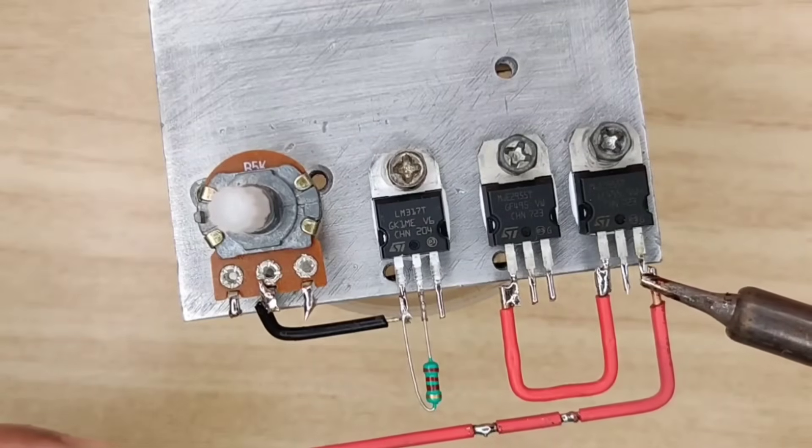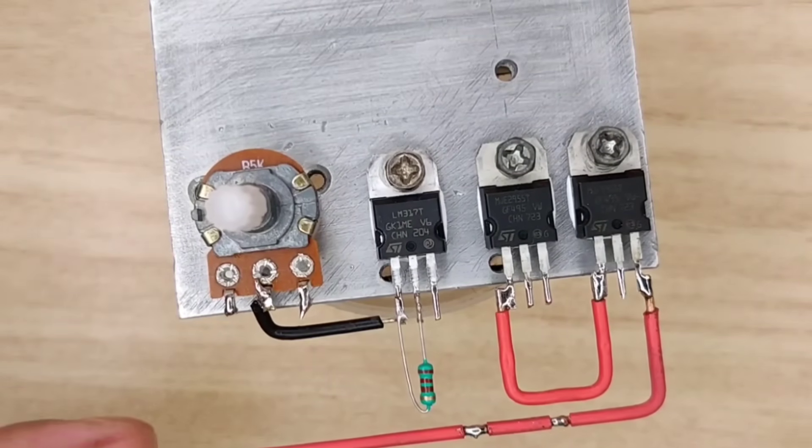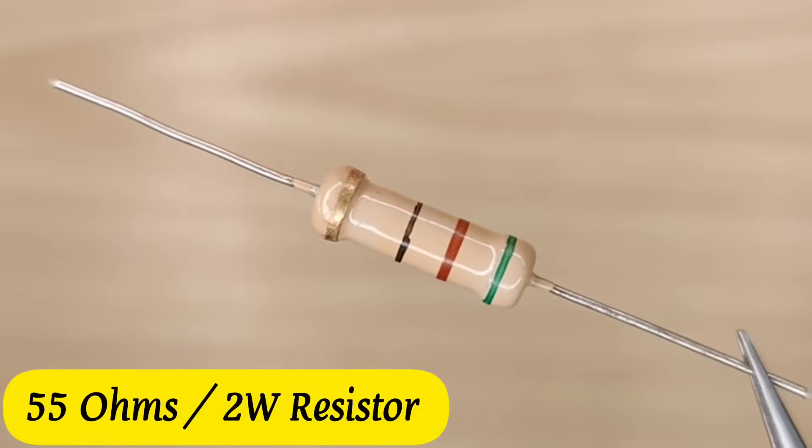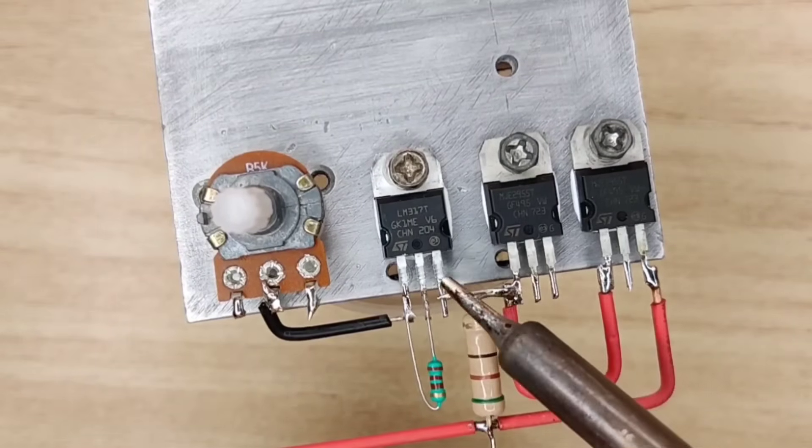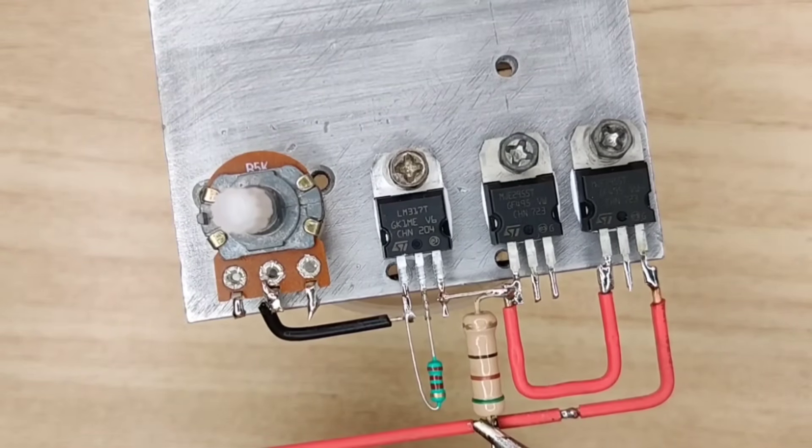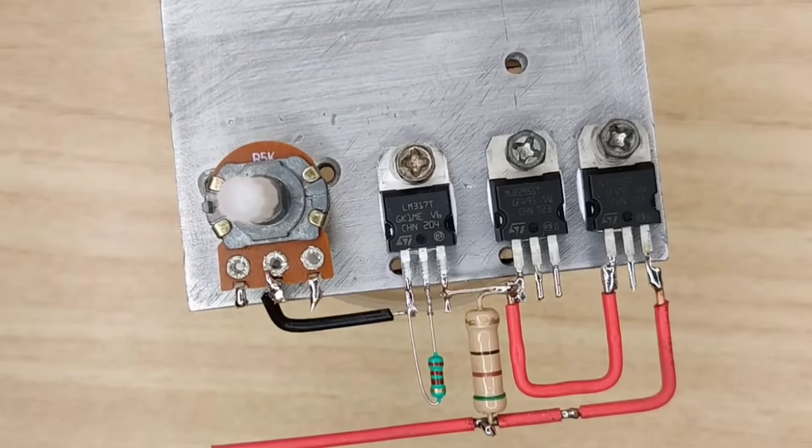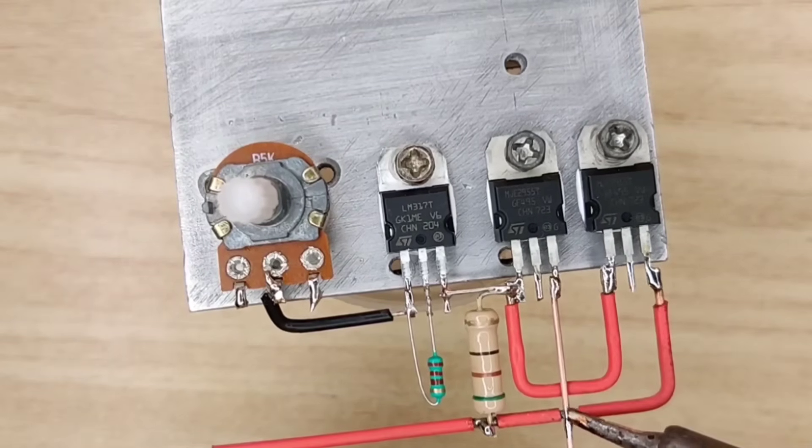Connect a copper wire on pin 3 of the transistor. Take a 55 ohm 2 watt resistor and solder it over here. Connect pin 3 of both transistors together.